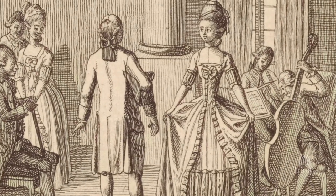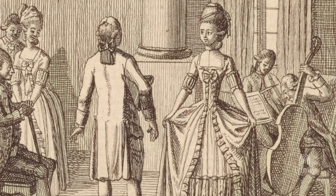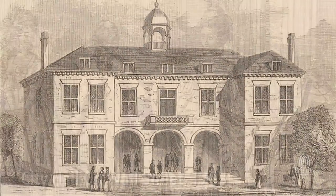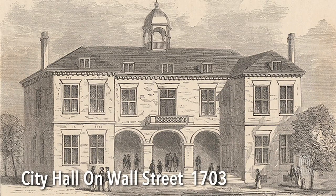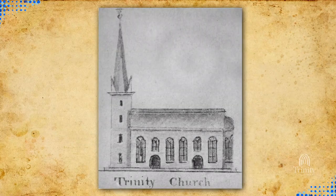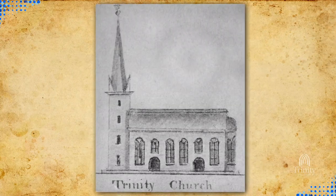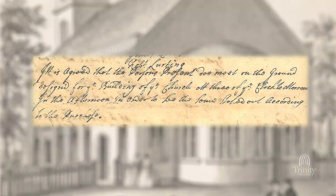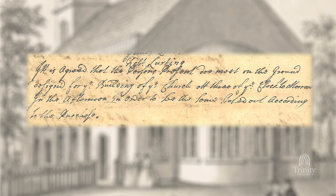We know that Trinity Church is at the center of the colonial ruling class regime — close ties with the most prominent merchants, close ties with prominent slaveholders, close ties with government officials. Some of the surviving records talk about how prominent New Yorkers had assigned enslaved people to work in building and constructing the original Trinity Church.